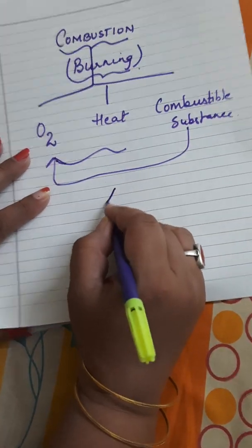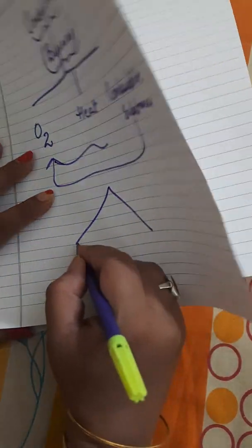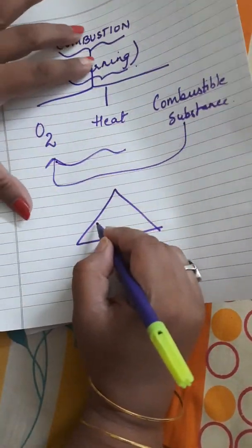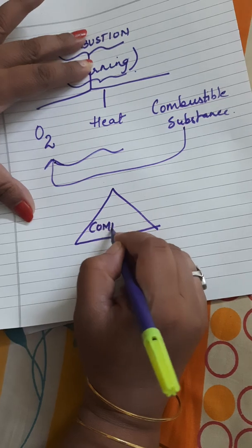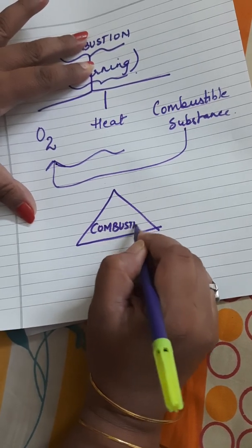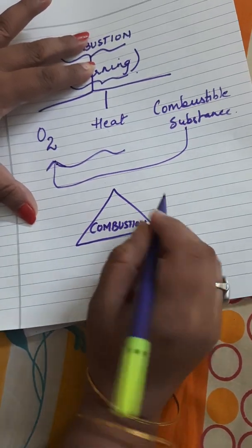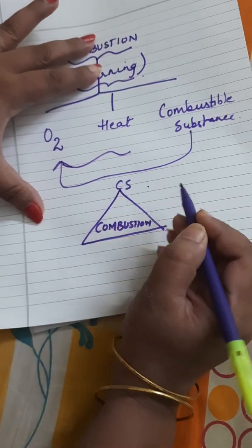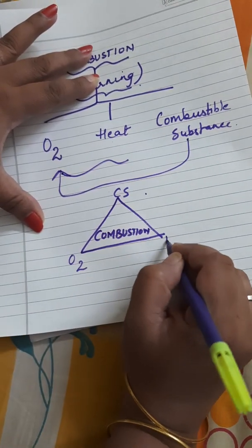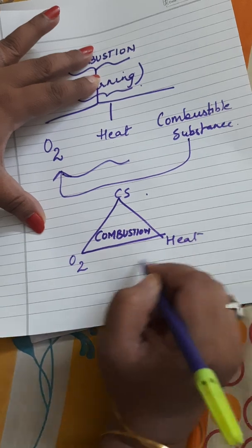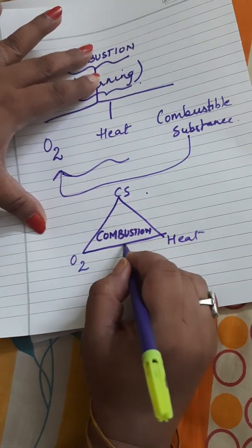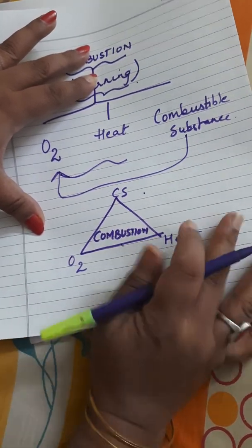All three elements are required for combustion. I gave you a fire triangle in which in between I wrote combustion. The three elements are combustible substance, oxygen and heat. If these three are there, combustion will take place.